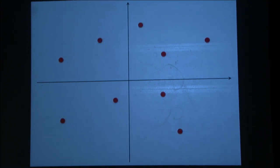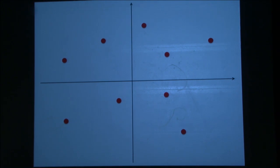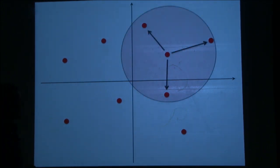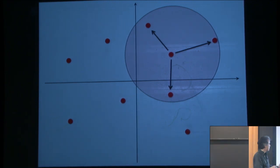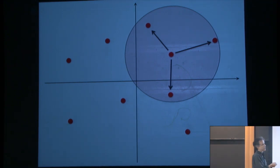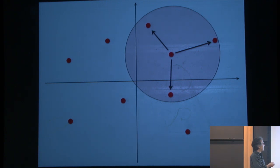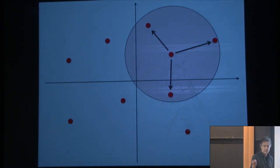Each agent has a radius of influence — those are the people they're going to be listening to. Then what happens is that person moves to the mass center of all of them. So this thing moves to the center of gravity of these agents. That's the model.